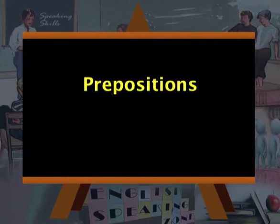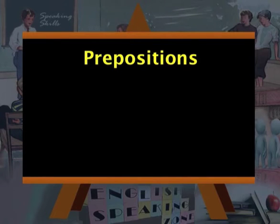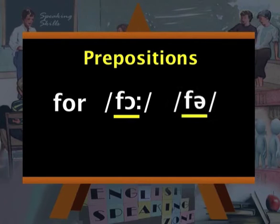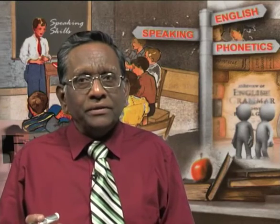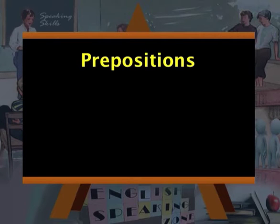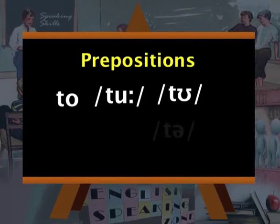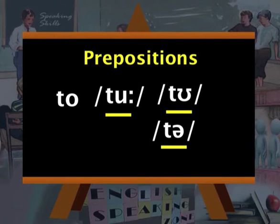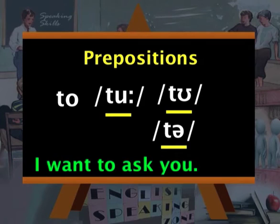Now let's take the next category of structural words — prepositions. A very frequently used preposition is 'for.' The strong form is 'FOR' but the weak form is 'f'r.' We say 'is this for me?' — not 'FOR me' but 'f'r me,' weakened. Then take 'to' — the strong form is 'TOO,' but the weak form is 'tuh' before a consonant. For example, 'I want to ask you' — 'to' before a vowel sound uses 'tuh,' and 'I want to go' — 'to go' uses 'tuh' before a consonant.